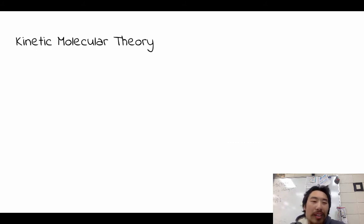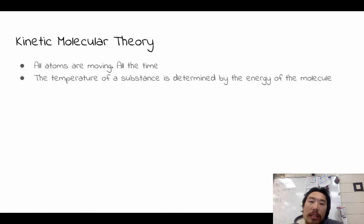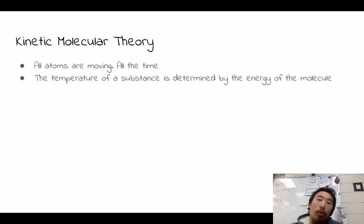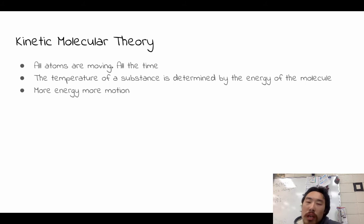To start us off, we're going to start with the kinetic molecular theory. The main points are that the atoms are always moving — all the time, they cannot stop moving. The temperature of a substance is determined by the energy of the molecule, so the higher the temperature, the more energy it has. More energy means more motion, and this links with the kinetic energy formula.